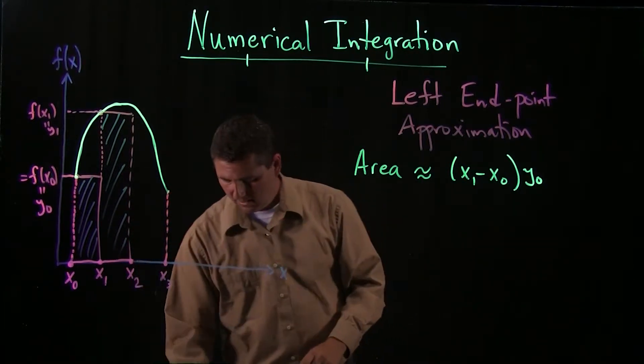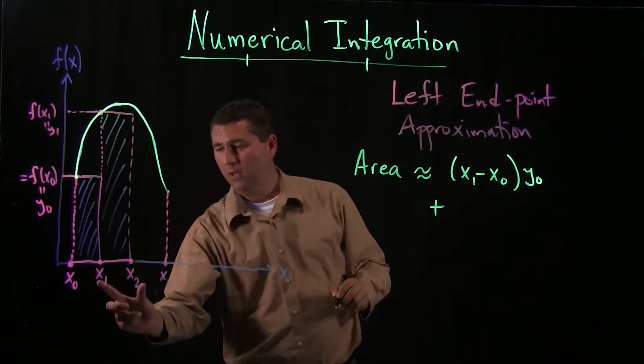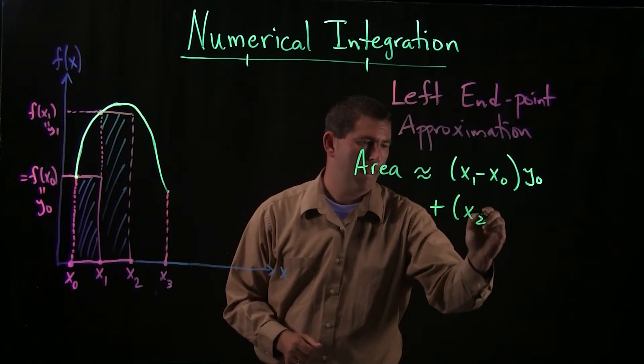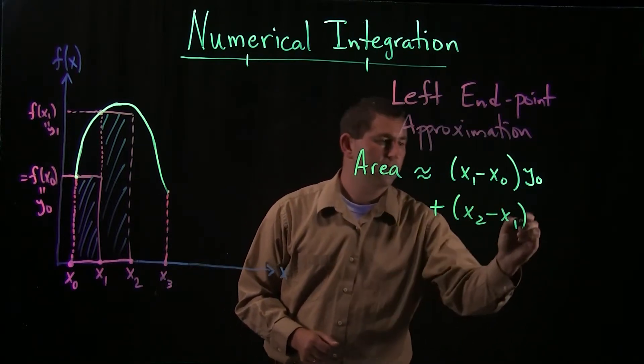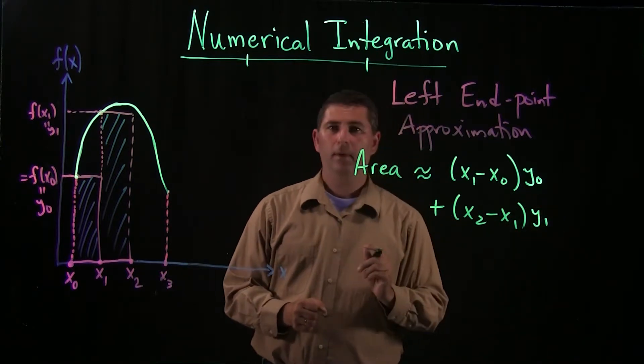Let's write down the area of this rectangle. Well, the base, that's x2 minus x1. And the height, well, that was our y1.